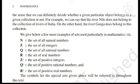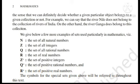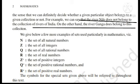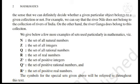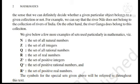We note that each of the above examples is a well-defined collection of objects। Well-defined in the sense that we can definitely decide whether a given particular object belongs to a given collection or not। For example, we can say that the river Nile does not belong to the collection of rivers of India। On the other hand, the river Ganga does belong to this collection।